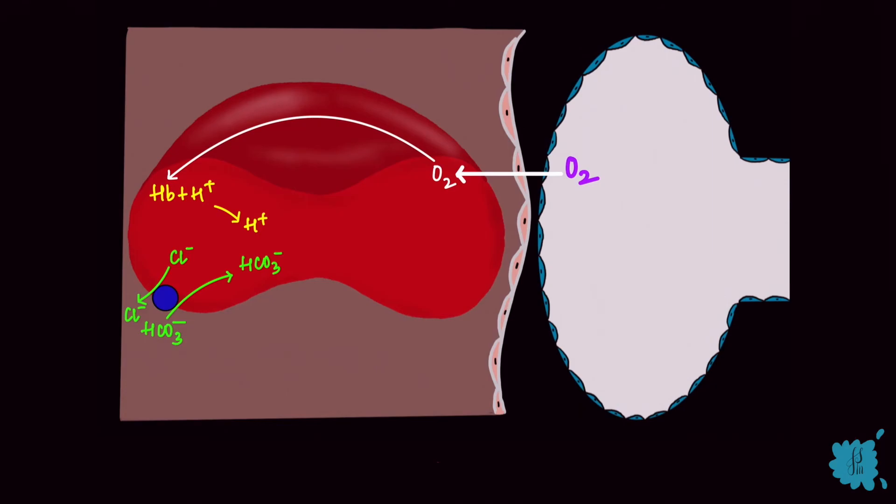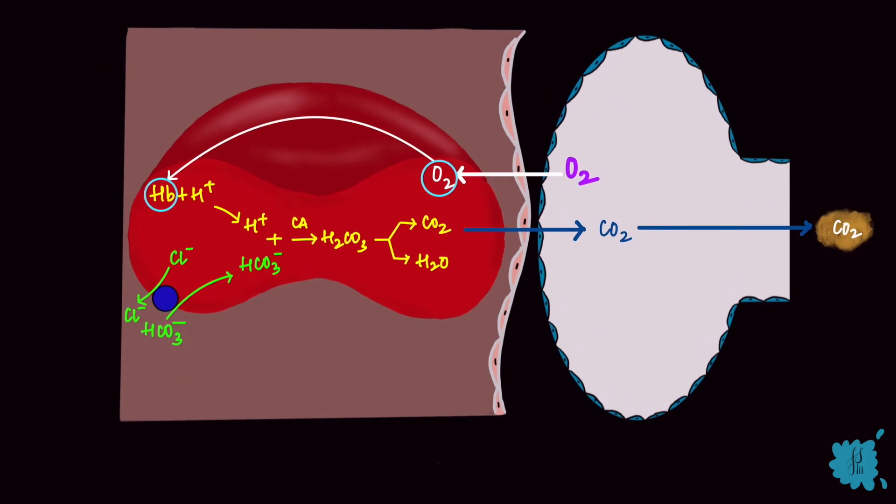So now hydrogen ions bind to bicarb ions and by carbonic anhydrase they form carbonic acid, which then dissociates into carbon dioxide and water. And the carbon dioxide gets breathed out. So the oxygenation of hemoglobin shifts this reaction towards the formation of carbon dioxide for expiration.